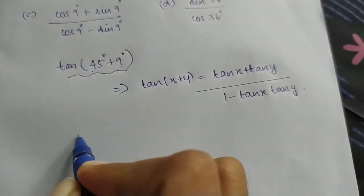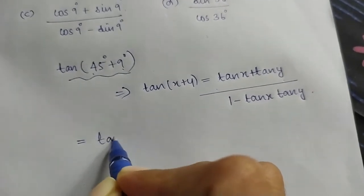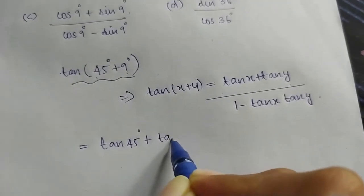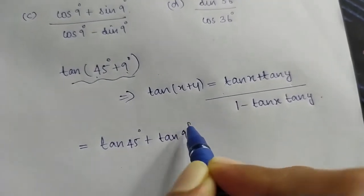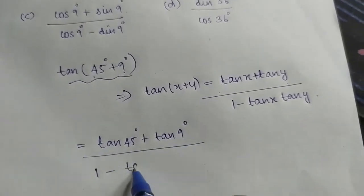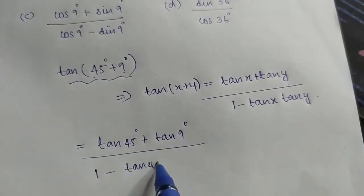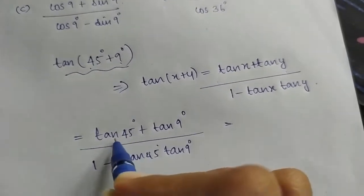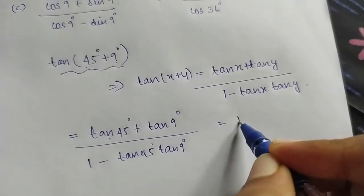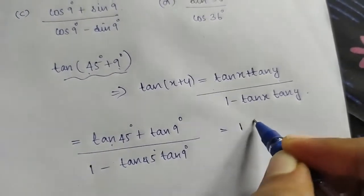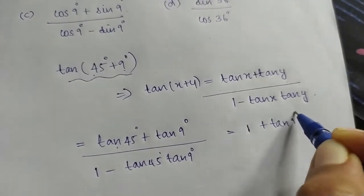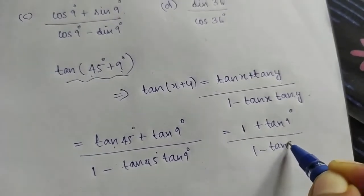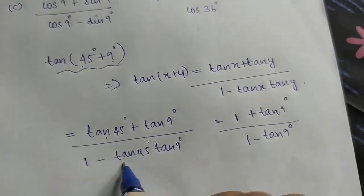We need tan 45 degree plus tan 9 degree, divided by 1 minus tan 45 degree into tan 9 degree. Tan 45 is a standard value: 1 plus tan 9 degree divided by 1 minus tan 9 degree, because tan 45 is 1.